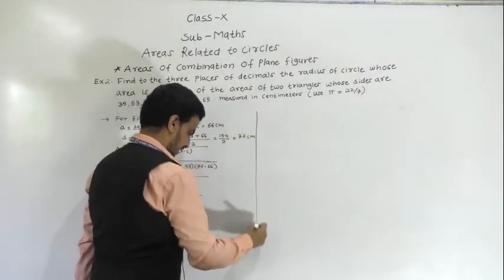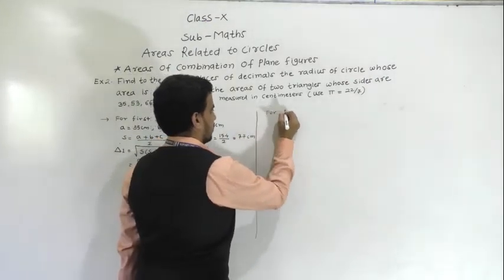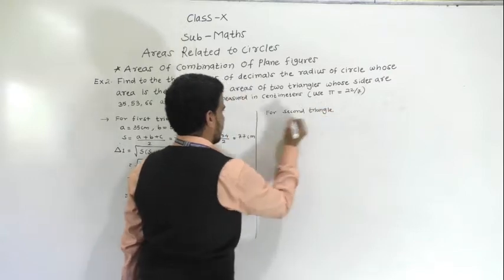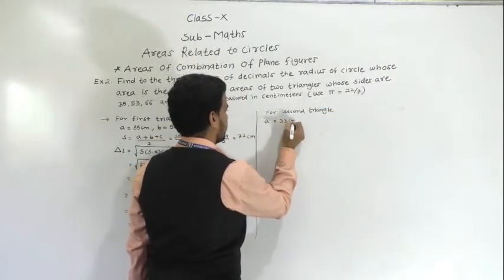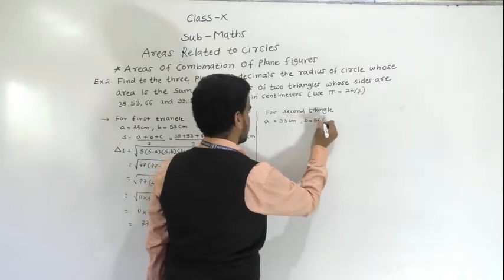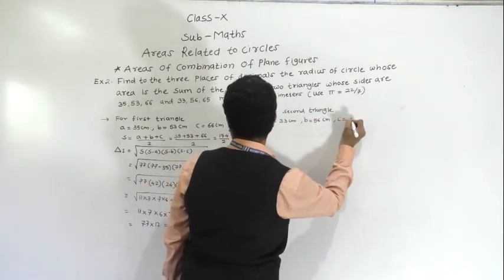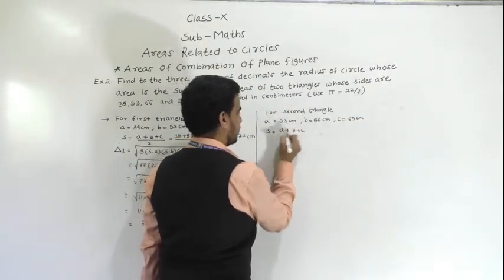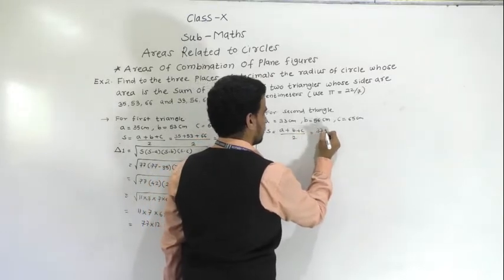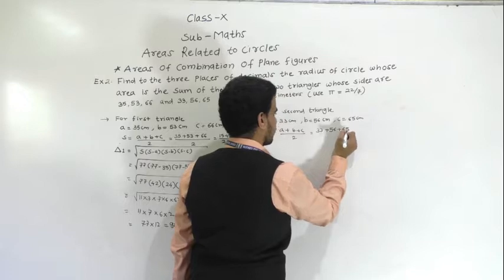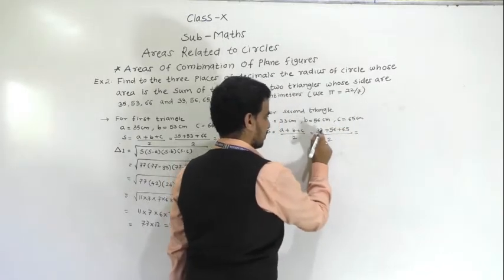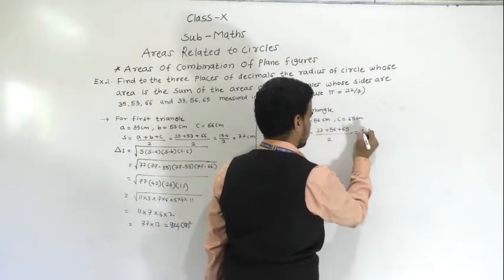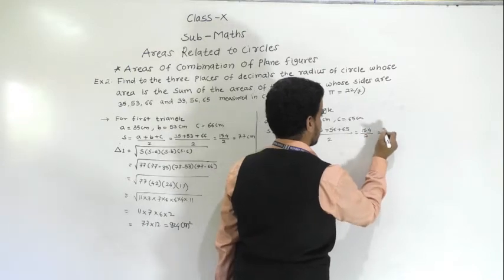Similarly, for the second triangle: a = 33 cm, b = 56 cm, c = 65 cm. Semi-perimeter S = (33 + 56 + 65)/2 = 154/2 = 77 cm again.